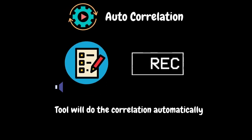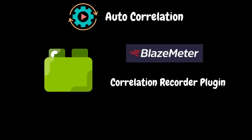In auto correlation, after recording, the tool will replay the script to analyze if there are any dynamic values. If it finds anything, it will show a list of values and we will have an option to pick and choose and apply the required correlations. The tool will then take care of replacing the dynamic values with variables automatically. In JMeter, we don't have any default element for auto correlation. However, BlazeMeter has developed a plugin with which we can do this auto correlation.